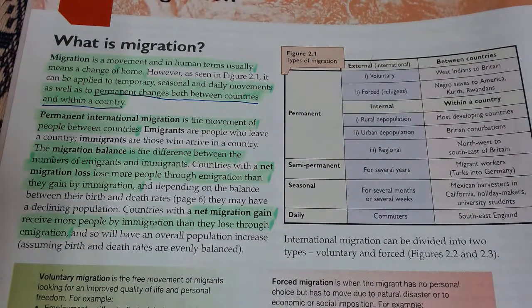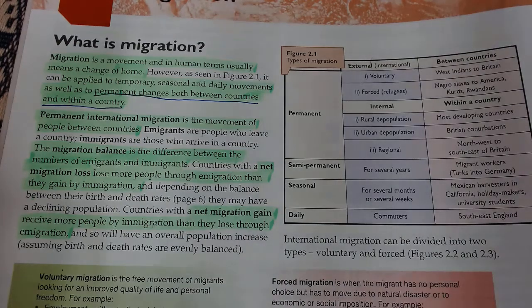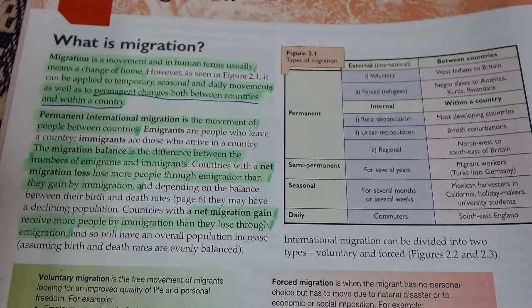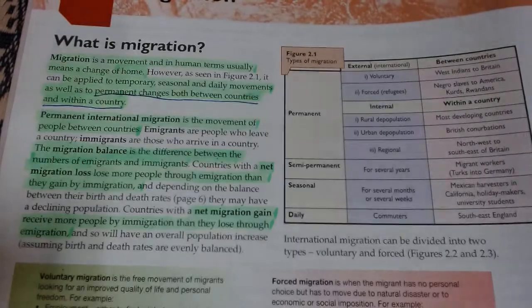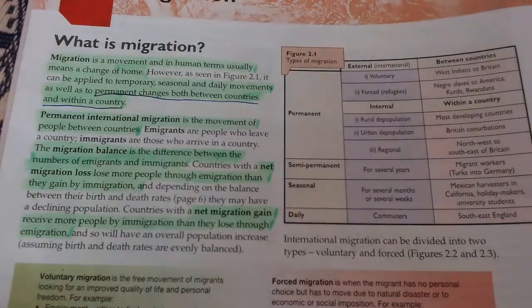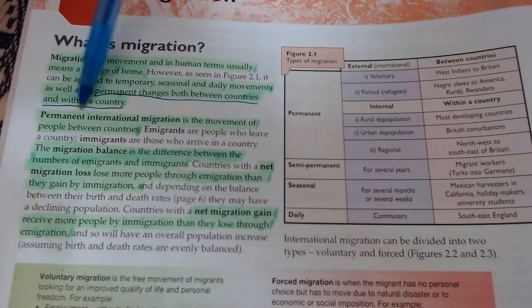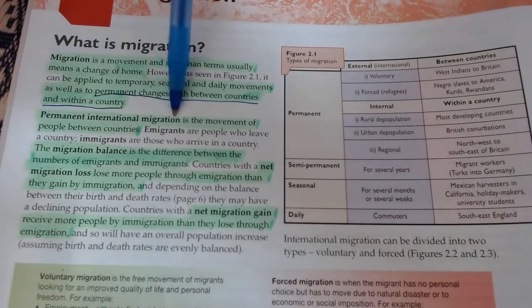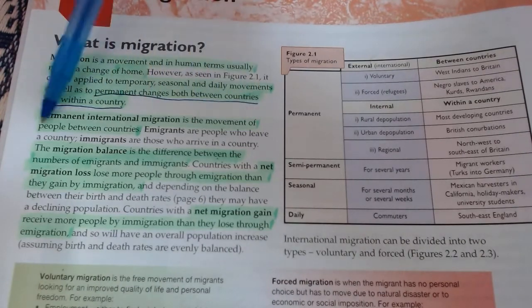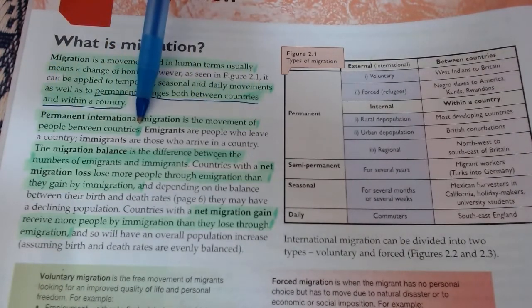That's important — you can move between countries or you can move somewhere else within your own country. For example, if you relocated to Grand Bahama, that would still be migration, but you haven't left your country. That's sometimes called national or internal migration — we'll get to that in another lesson. Permanent international migration is the movement of people between countries — we know the terms immigrants and emigrants.